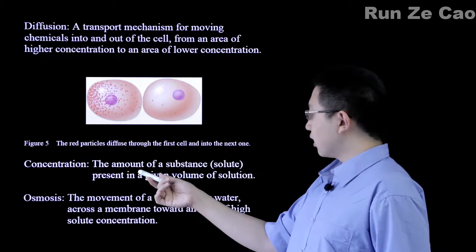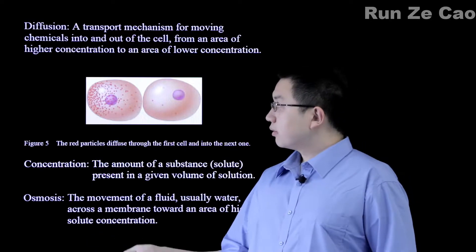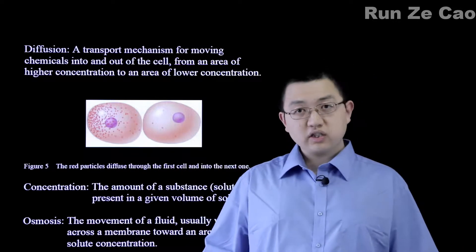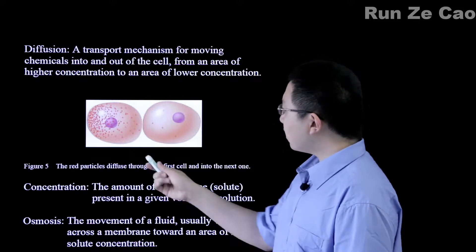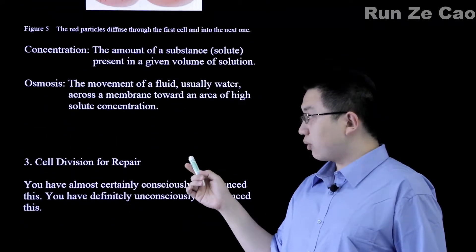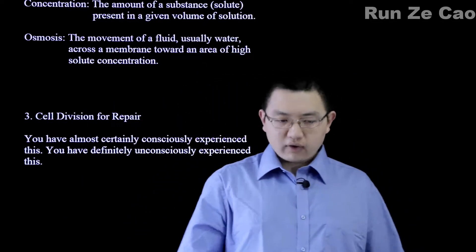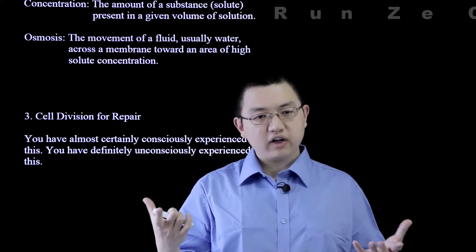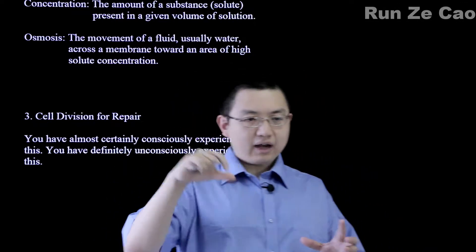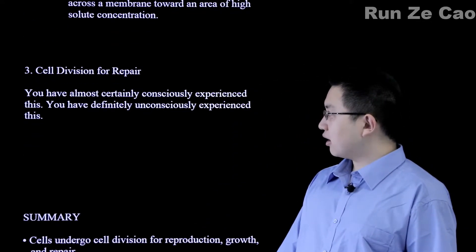Concentration is defined as the amount of substance — solute — present in a given volume of solution. Diffusion is technically just movement from an area of high concentration to an area of low concentration; it does not necessarily require a membrane. Osmosis is the movement of a fluid — almost always water — across a membrane toward an area of high solute concentration. If most of a given space is solute, there is a low water concentration, and adding more solute lowers it further.